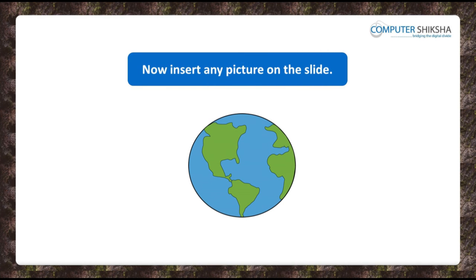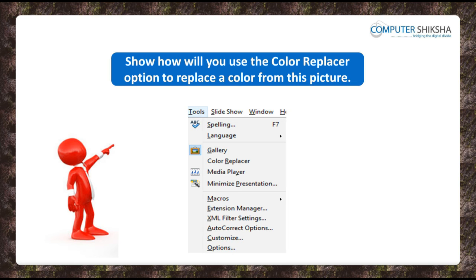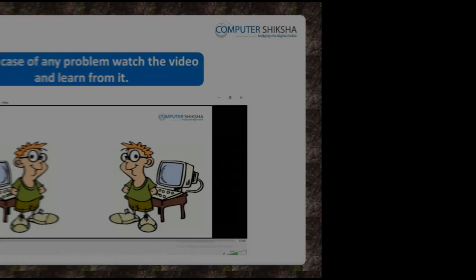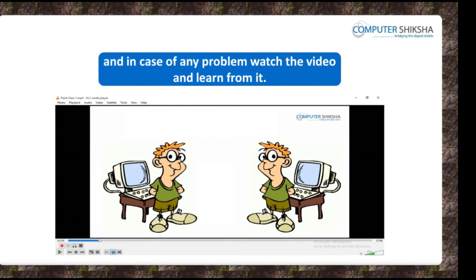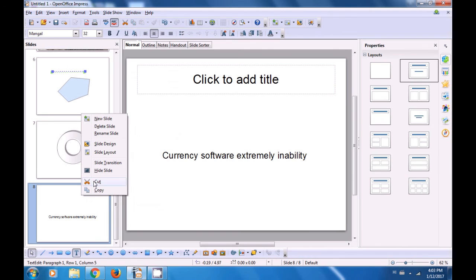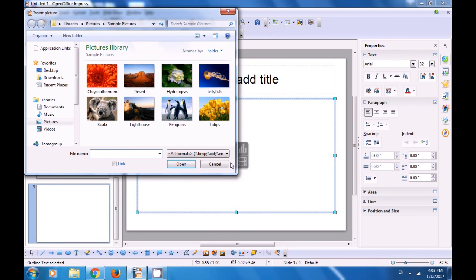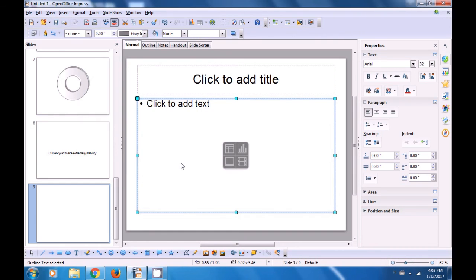Now, all of you show how you can get a picture on any one of your slides and then show how you will use the Color Replacer option to replace a color from this picture. With the help of this video, we are going to learn the use of the Color Replacer. To use it, we first insert a new slide, click on the Slide pane, right-click and click on New Slide. Since this is a title slide, you can use the Insert Picture option here. So when you click there, you can see where your pictures are on the computer. We have selected Desert. Click Open and this picture gets inserted on your slide.